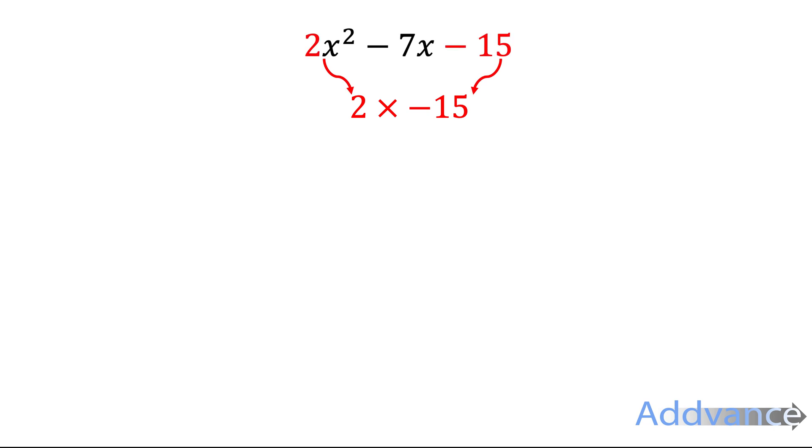So we're going to start by multiplying the first and the last numbers together. 2 times minus 15 is minus 30. And we're looking for two numbers that add to make minus 7 and times to make minus 30. So two numbers that add to make the middle number and multiply to make the multiple you found from multiplying the first and last numbers together.